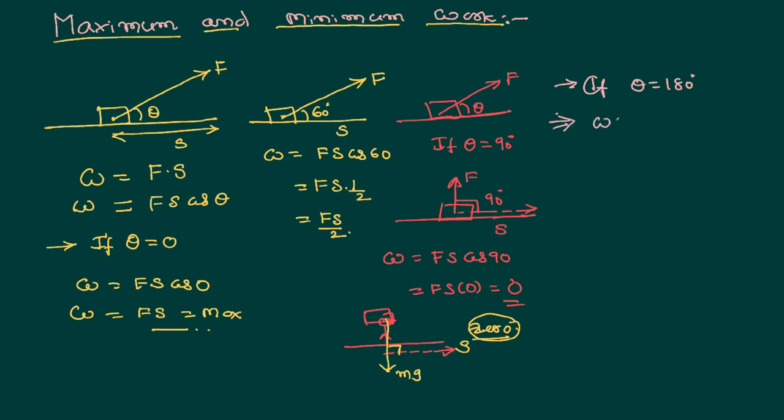Then I can write an equation for work done as Fs cos 180. You know cos 180 equals minus 1, therefore that equals minus Fs.